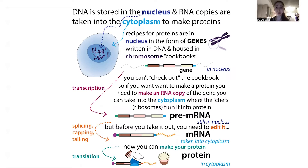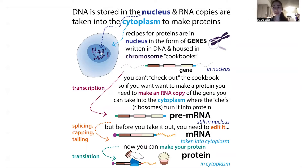Translation happens using ribosome complexes out in the cytoplasm, which is why we have to export that mRNA out of the nucleus — and that's good because we want to keep all those original copies safe in the nucleus. These original copies are precious for that cell and for any cells that are made from that cell.